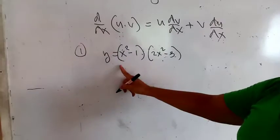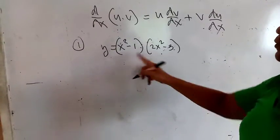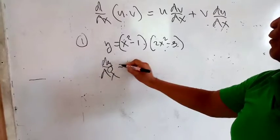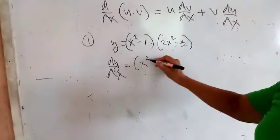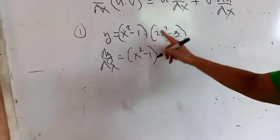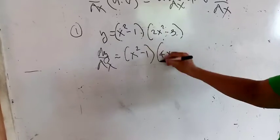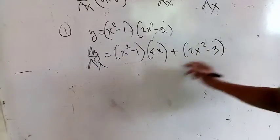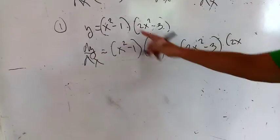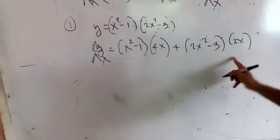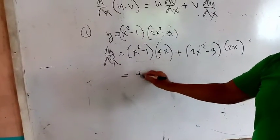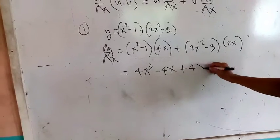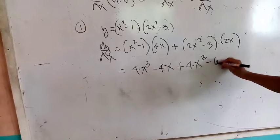For example number 1, instead of expanding these two binomials, we go directly to differential calculus. The derivative of y with respect to x will be the first term, x squared minus 1, times the derivative of the second. How do we differentiate that? 2 times 2 will be 4, times x to the 2 minus 1, so 4x. The derivative of the constant is 0. Plus the second, 2x squared minus 3, times the derivative of the first, which is 2x. The derivative of the constant is 0.